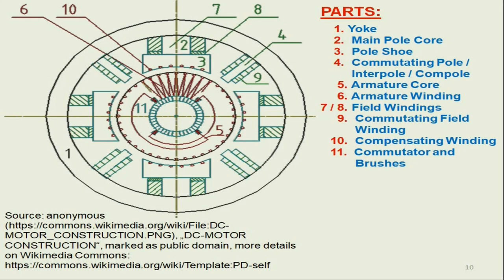This is a schematic diagram of a DC machine illustrating its various parts. In this diagram you may easily find the yoke, the main pole core, the pole shoe, the commutating pole or interpole, the armature core, the armature winding, the field windings, the commutating field winding, the compensating winding, and the commutator and brushes.